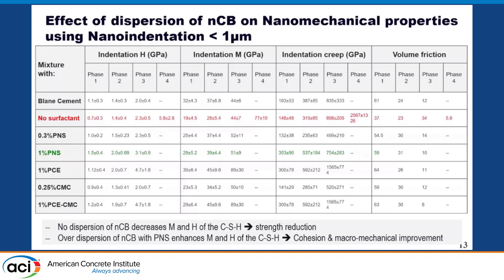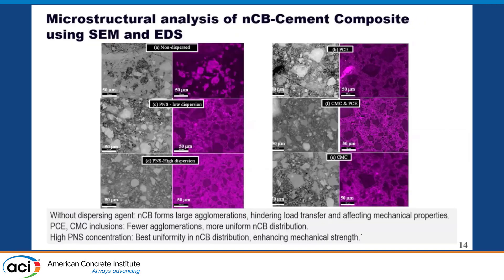This answers why strength is reduced without surfactant: a new nano-scale phase develops, impacting macro-scale strength while maintaining electrical conductivity. It also explains why over-dispersed carbon black enhances compressive strength but loses conductivity — the volumetric wiring network is broken. To confirm these findings, we used SEM with EDS analysis on the same microstructures used for nano-indentation. Non-dispersed carbon black shows large chunks of carbon black material — electrically conductive but with reduced strength — while highly dispersed carbon black shows no such chunks, confirming the breaking of the volumetric wiring and the enhancement of strength.